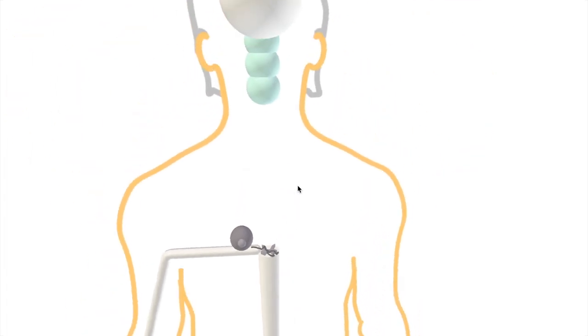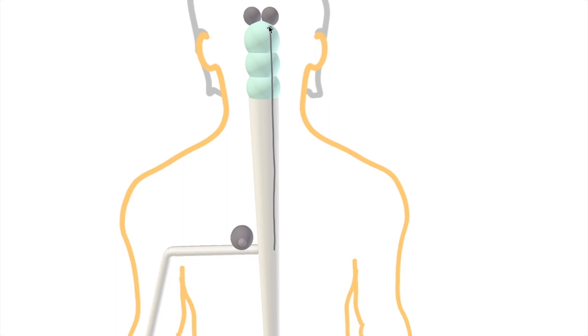So our information has already crossed over, let's say into the anterior spinothalamic tract, so we continue up toward the thalamus, which sits right on top of the midbrain and which contains the cell body of our third order neuron.